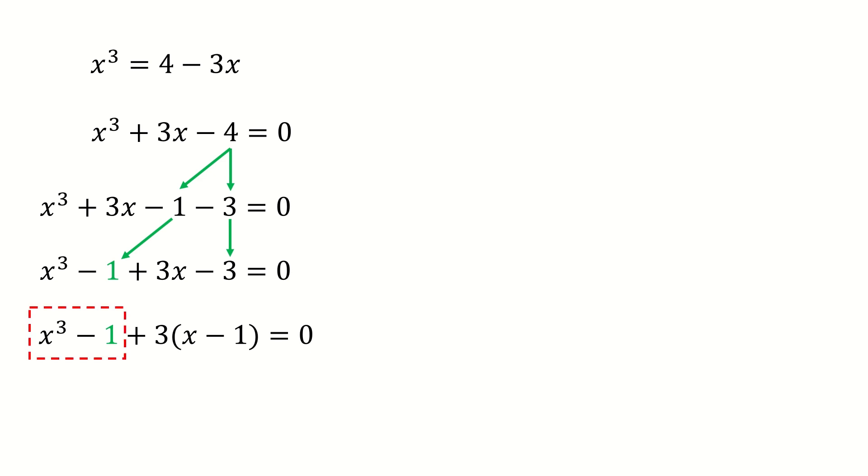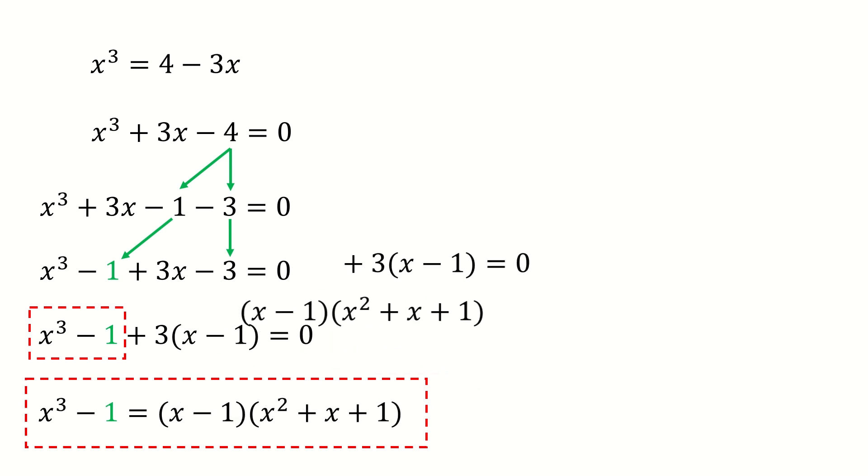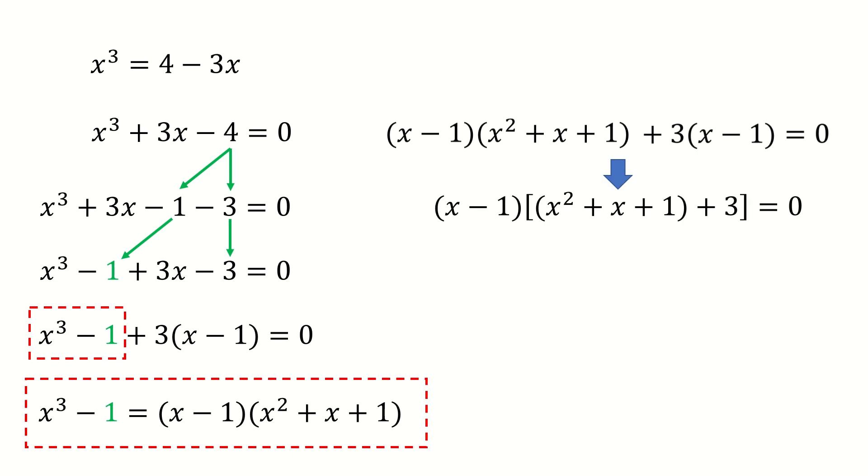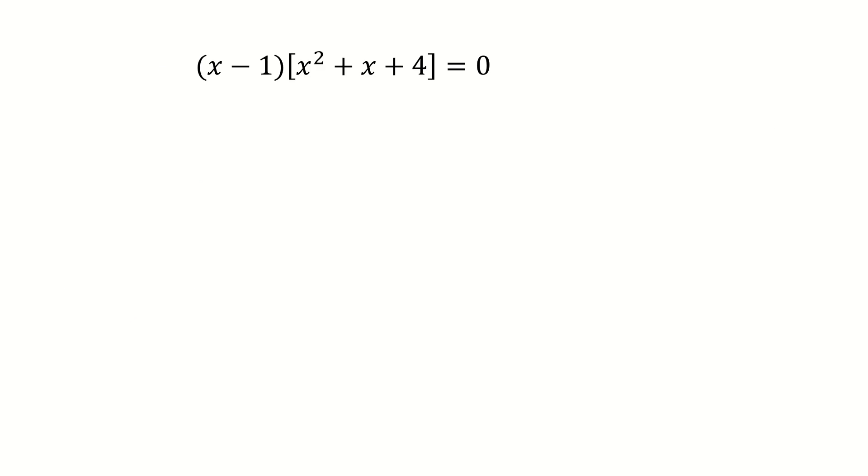But note this term in the box. We use this formula to factorize this term. Then we can rewrite this equation in the following form. We factor x minus 1 out. Simplify it.